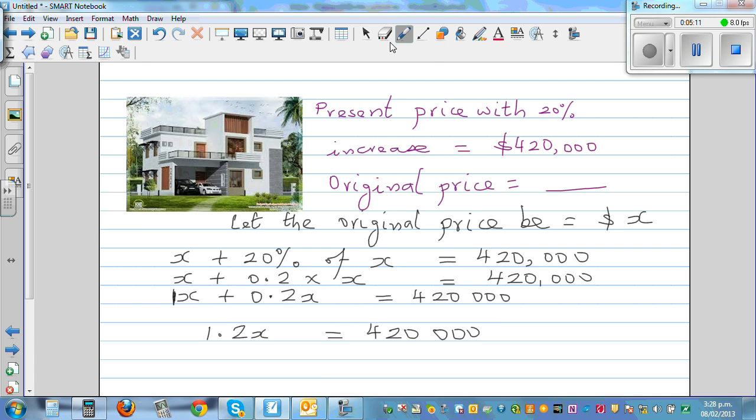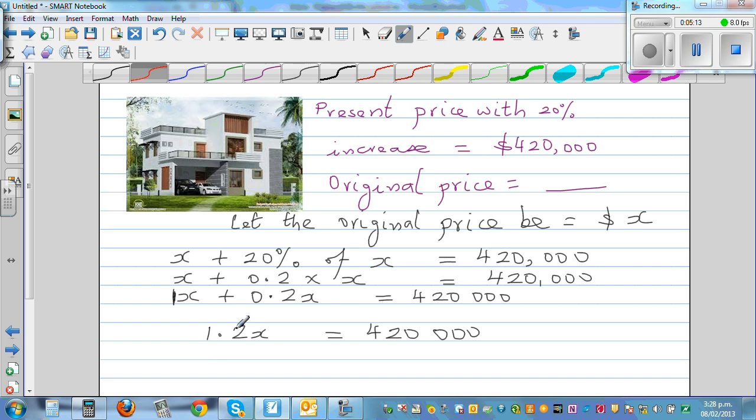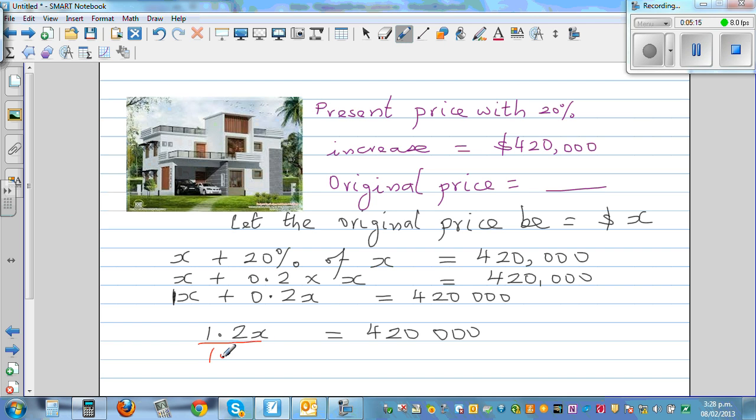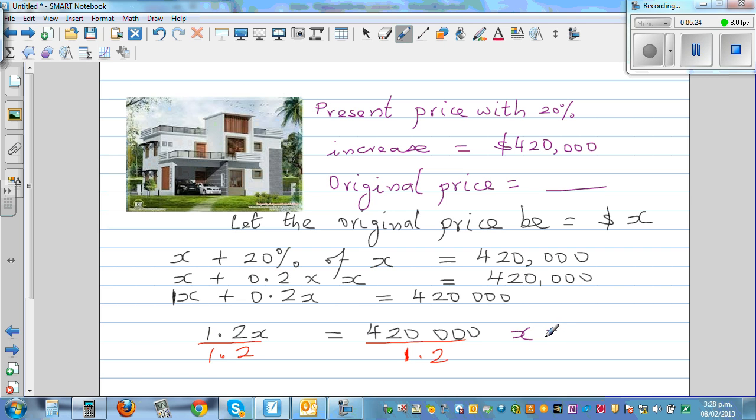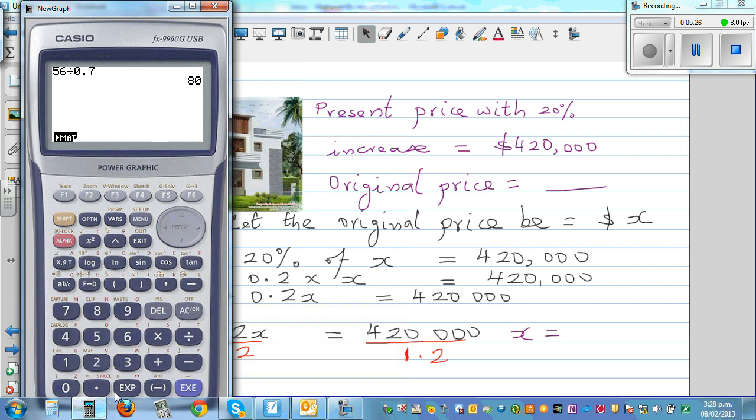Now I want to cancel this 1.2 from this side. I'm going to divide this side by 1.2. So you're going to divide this side by 1.2. So the answer is X is equal to this divided by this. So let me get a calculator for 420,000 divided by 1.2 equals 350. The original price was 350,000.